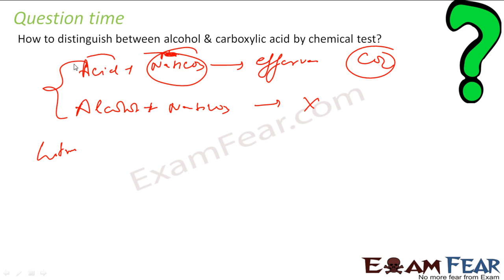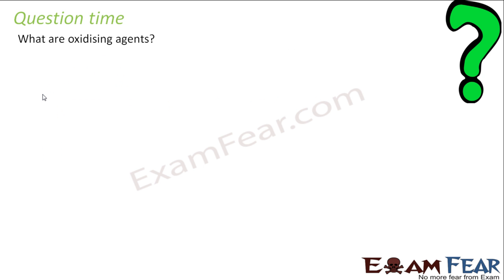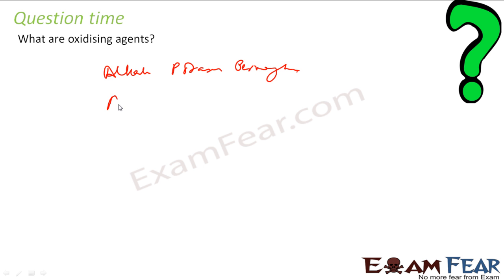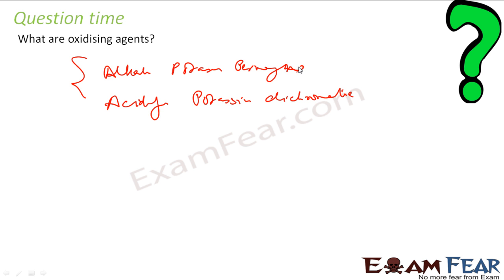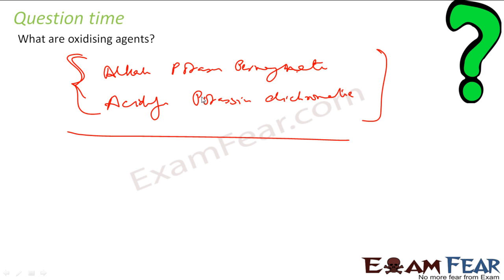You can also go for a litmus test. Since carboxylic acid is acidic in nature, it will have an effect on litmus, but alcohol will not have any effect on the litmus test. Regarding oxidizing agents: anything which adds oxygen to something — for example, alkaline potassium permanganate solution or acidified potassium dichromate — these two are oxidizing agents. For alcohol, you can use these oxidizing agents and you get an acid.